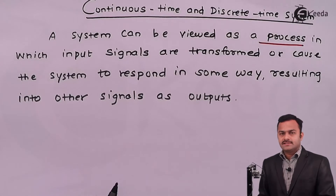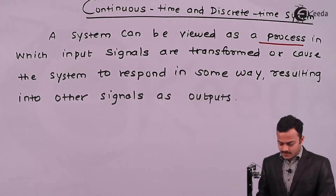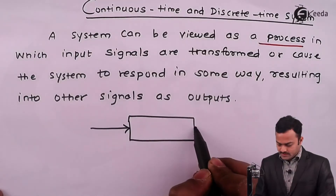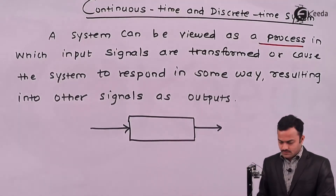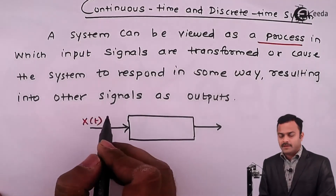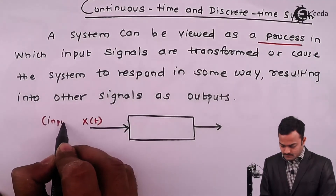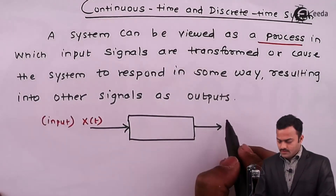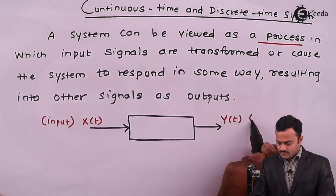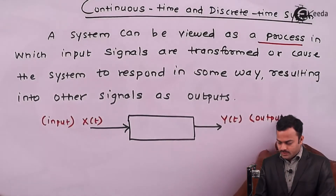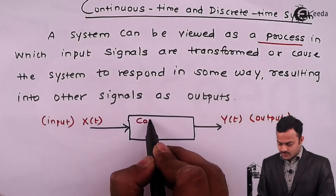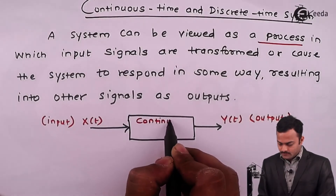The simple representation of any system will be like this — it just relates two signals. One we call as input signal, represented by x(t), and on the other side we get output signal y(t). So x(t) as the input signal passes through this continuous time system.